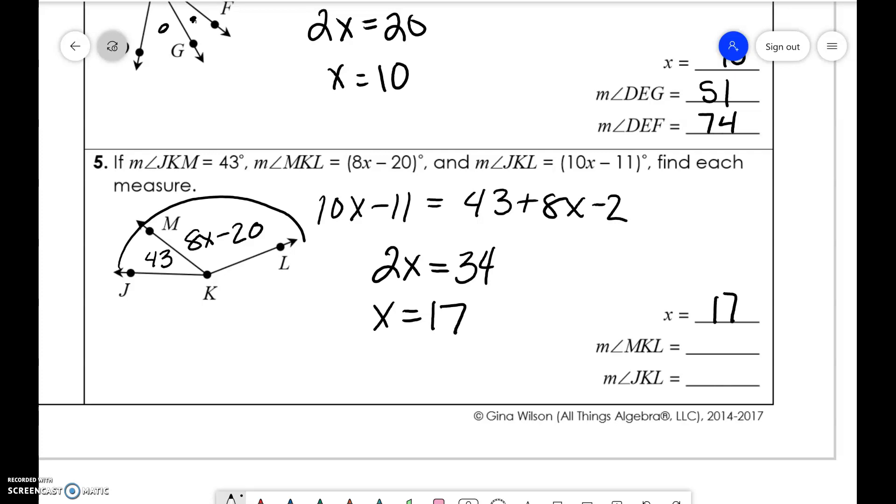So MKL, so 8 times 17 minus 20 is 116. And JKL, 10 times 17 minus 11 is 159.